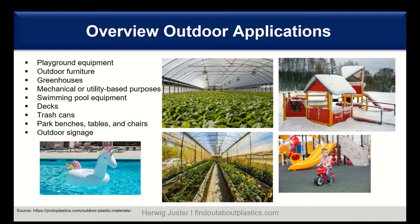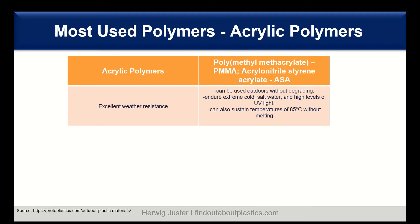There are many outdoor applications. Here I give you an overview of the different applications, most of which you are familiar with. For example, playground equipment, outdoor furniture, greenhouses, swimming pools and swimming pool equipment, and also park benches, tables and chairs — they all use plastics. The question is now which one you can select for such applications. The first ones we have a look at are the acrylic polymers, mainly PMMA and also ASA.